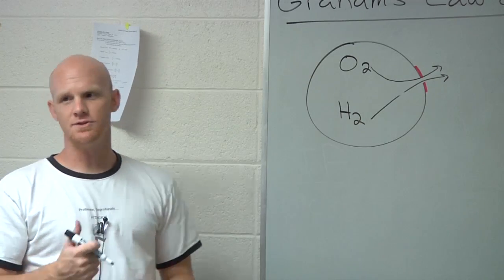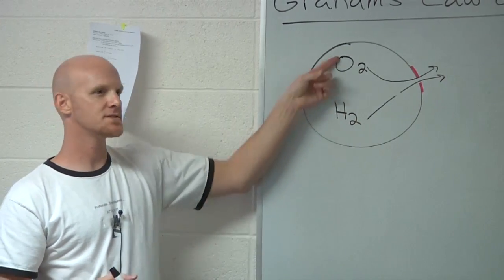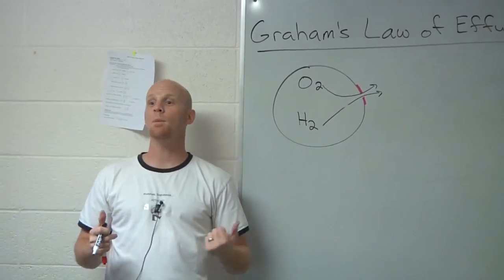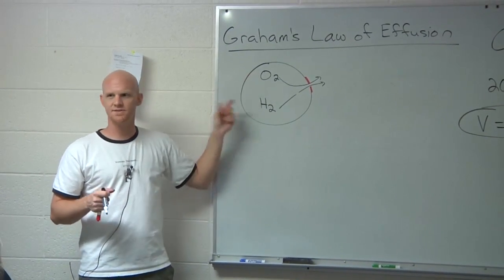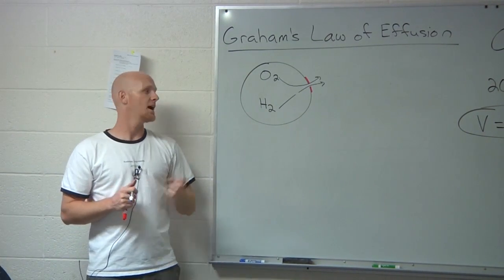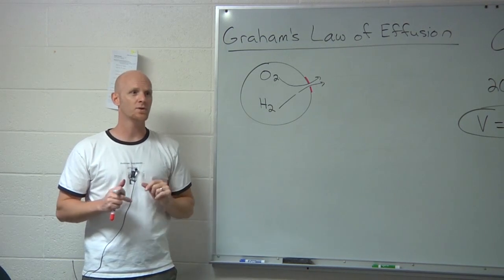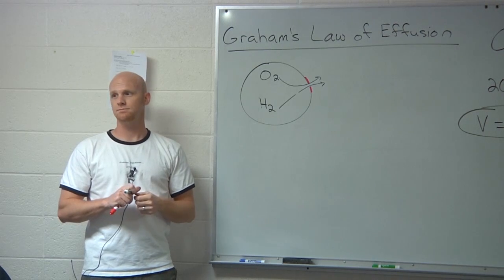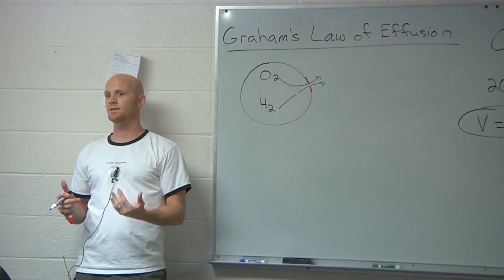Graham's Law of Effusion allows us to compare two gases escaping through that narrow slit, which one escapes faster and how much faster it escapes. Which one of these gases will escape faster? Hydrogen. Definitely escapes faster. Why? Because it's lighter. Because it's lighter, it moves faster on average. And if it moves faster on average, then it's going to escape faster on average.